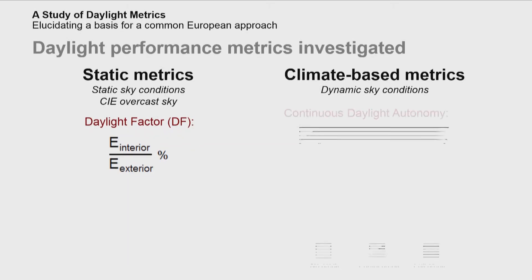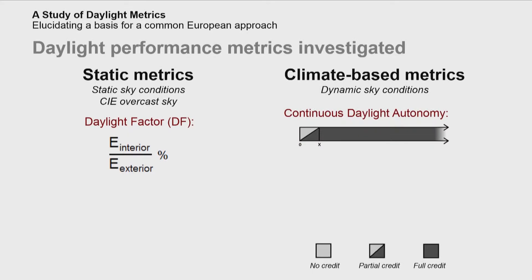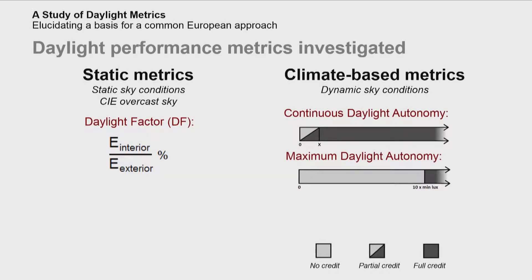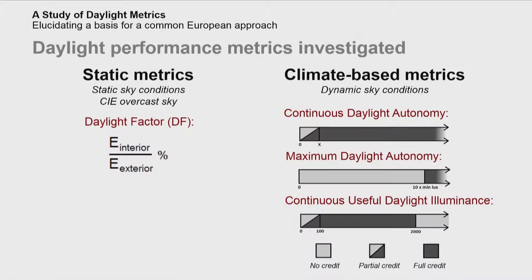The investigated metrics are the continuous daylight autonomy, which has only a lower boundary for the illuminance level. We were also looking at the maximum daylight autonomy, which was defined in this study for illuminance above 2,000 lux. And lastly, we investigated the continuous useful daylight illuminance, which is defined by both a lower and an upper illuminance level.